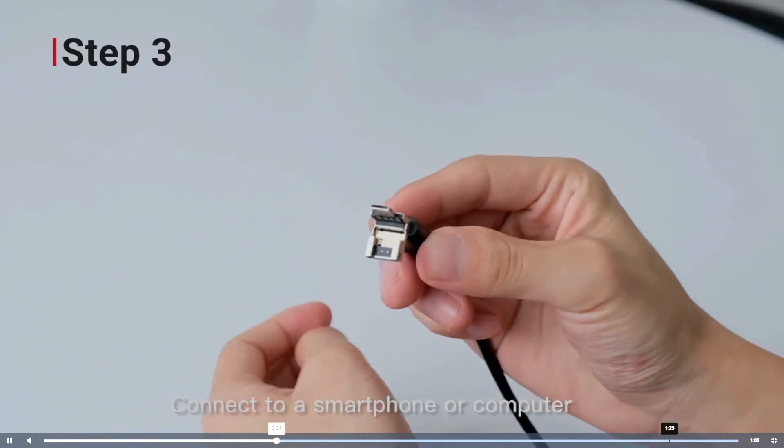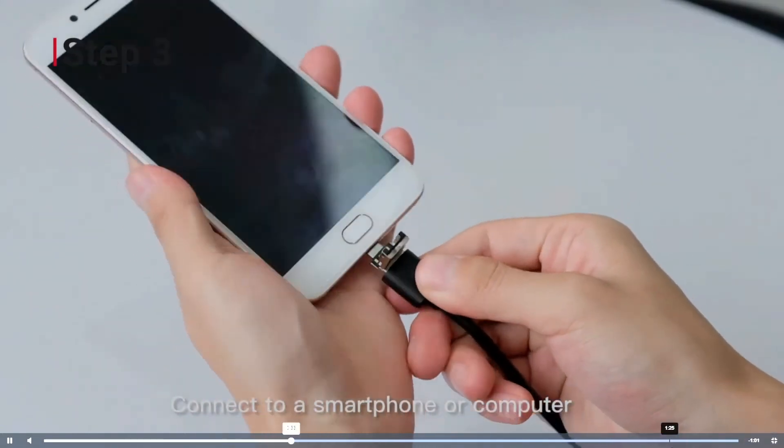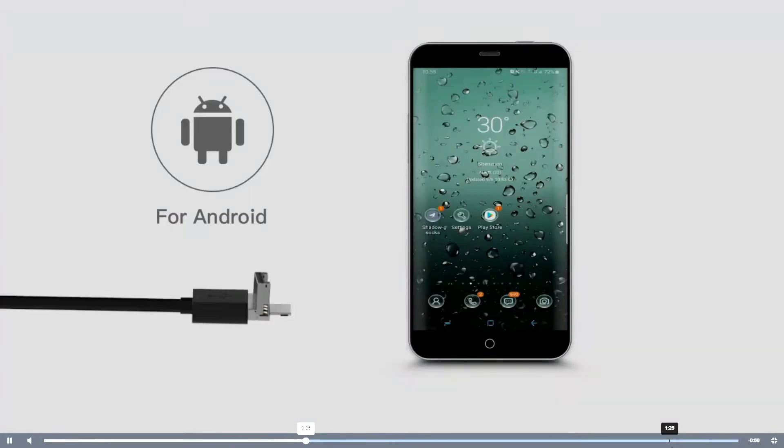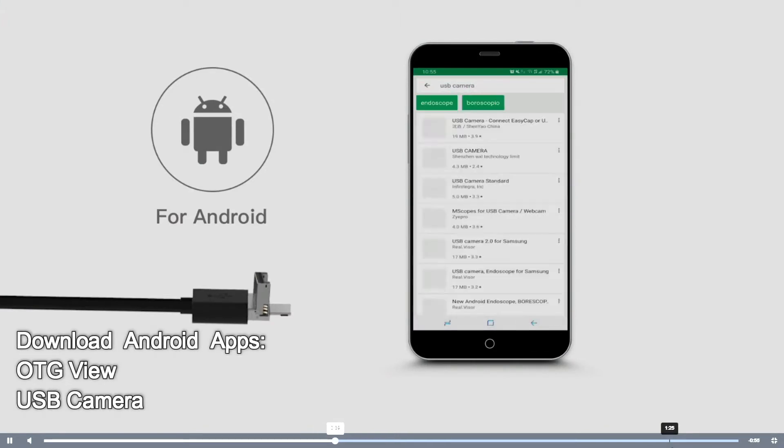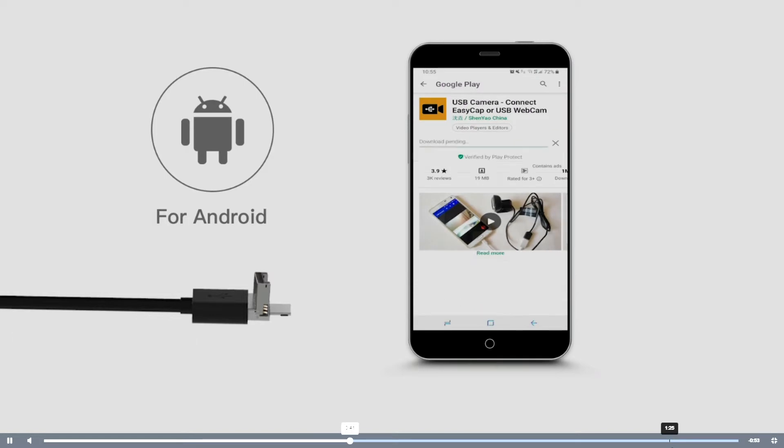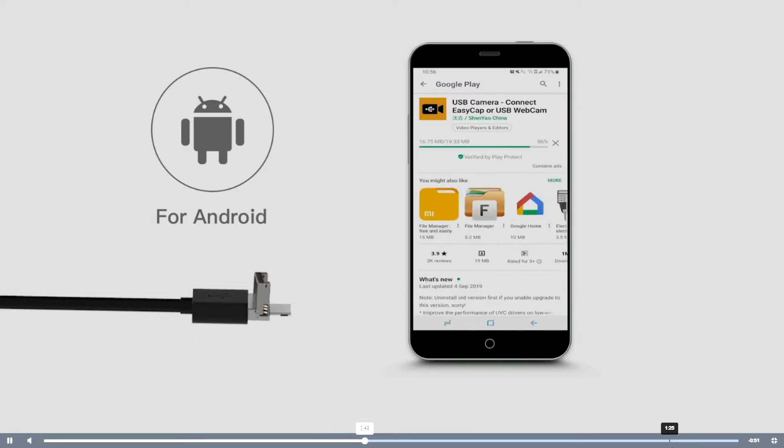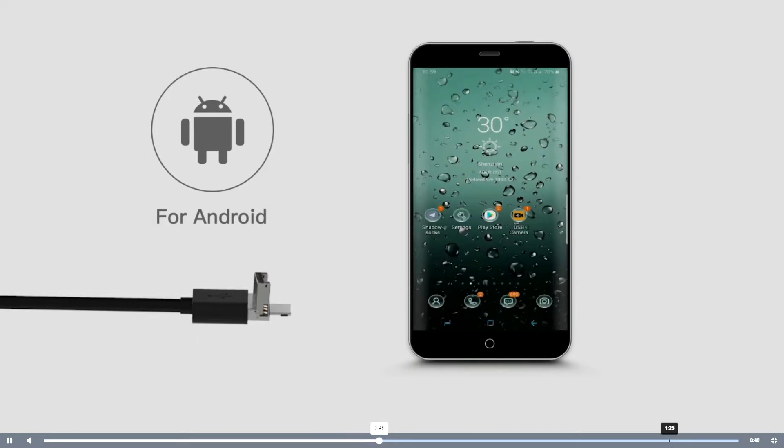Directly connect to Android smartphones or Windows or Mac computers. For Android, download apps such as OTG View, USB camera app, or other compatible camera apps. Then simply connect your Borescope and open up the app to view.